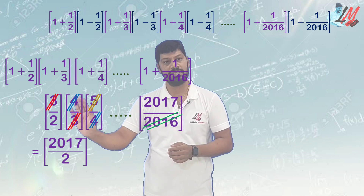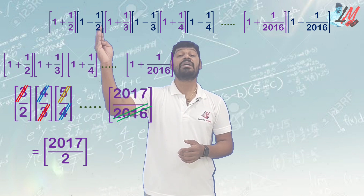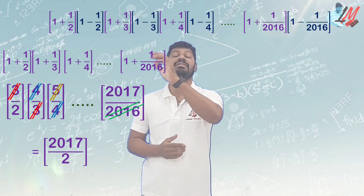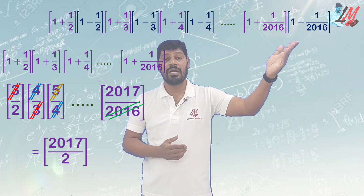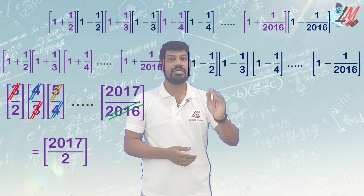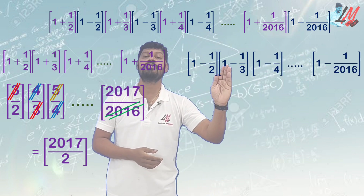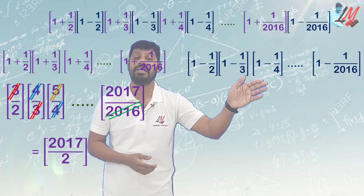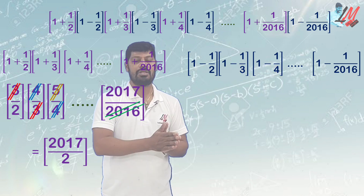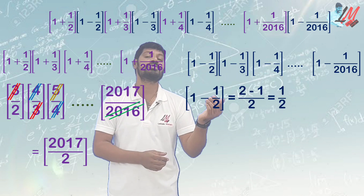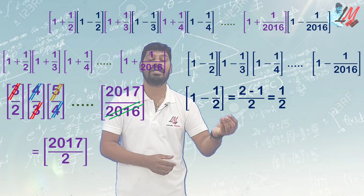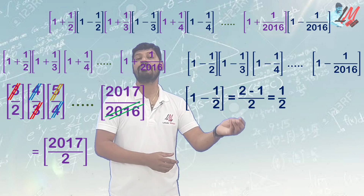Now for the minus group: (1 minus 1/2), (1 minus 1/3), (1 minus 1/4), up to (1 minus 1/2016). We simplify each bracket: 1 minus 1/2 equals 1/2. Then 1 minus 1/3 equals 2/3. The first bracket is 1/2, the second bracket is 2/3, the next bracket is 3/4, and so on.